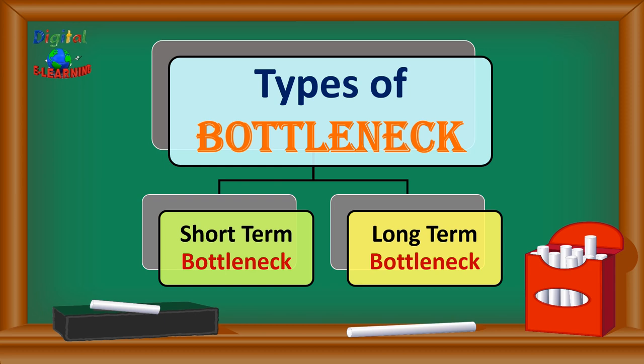Long-term bottlenecks are recurring — they remain for a long time, affect your production line and capacity by a huge margin, and may result in loss of revenue. That is why they are considered major bottlenecks. Causes include lack of appropriate technologies, limited funds and resources, disorganized workforce, less trained workers, and lean manufacturing techniques that are not applied.